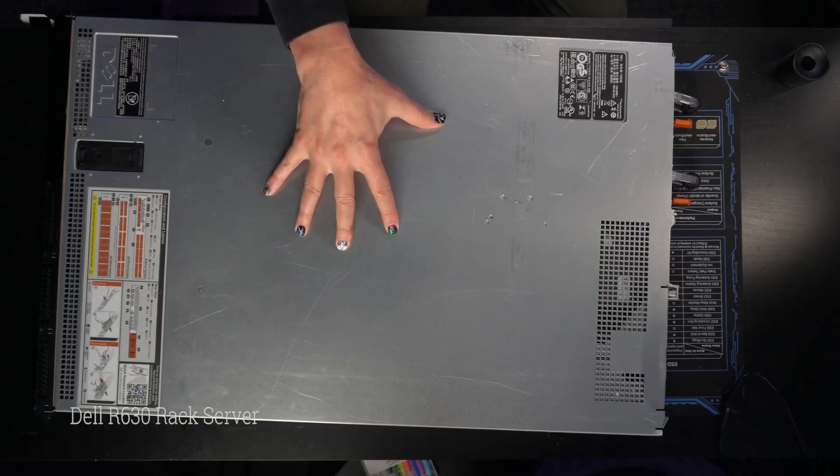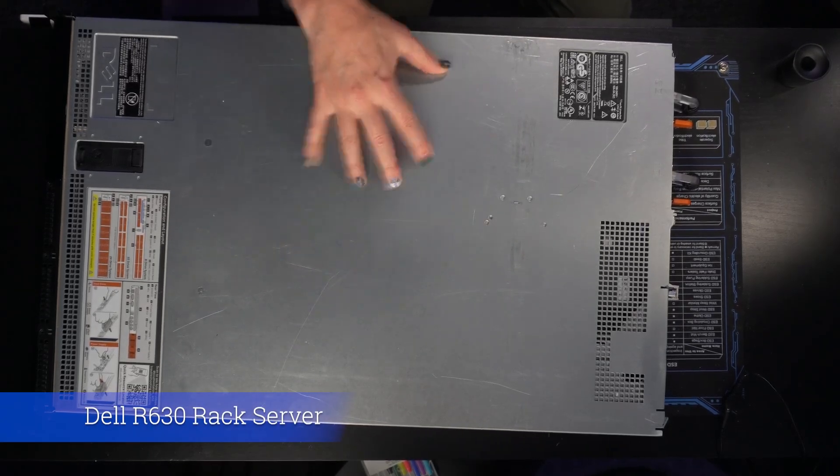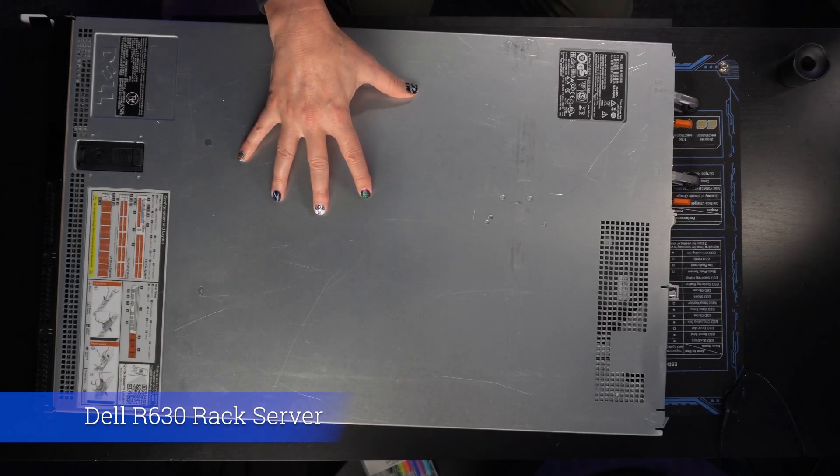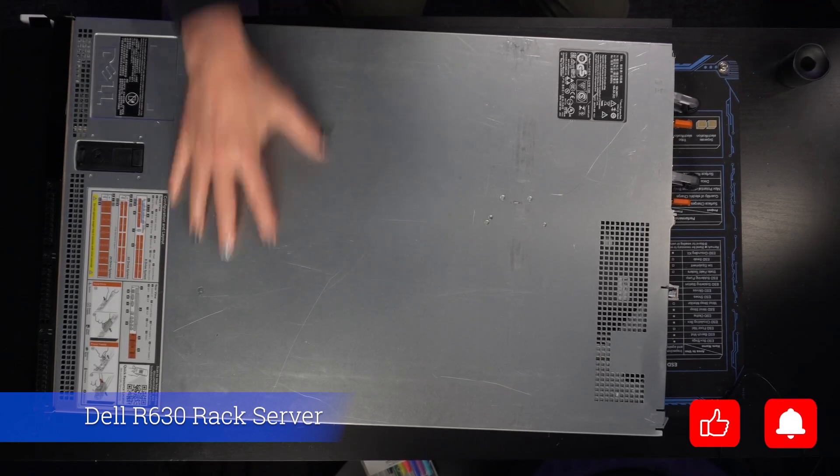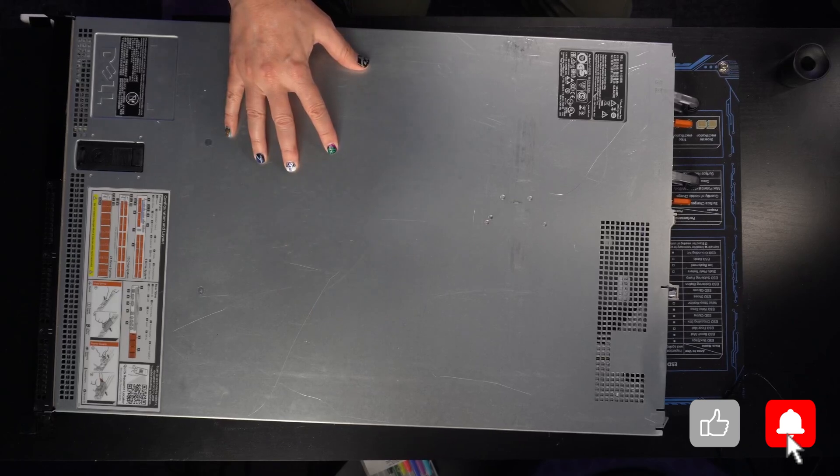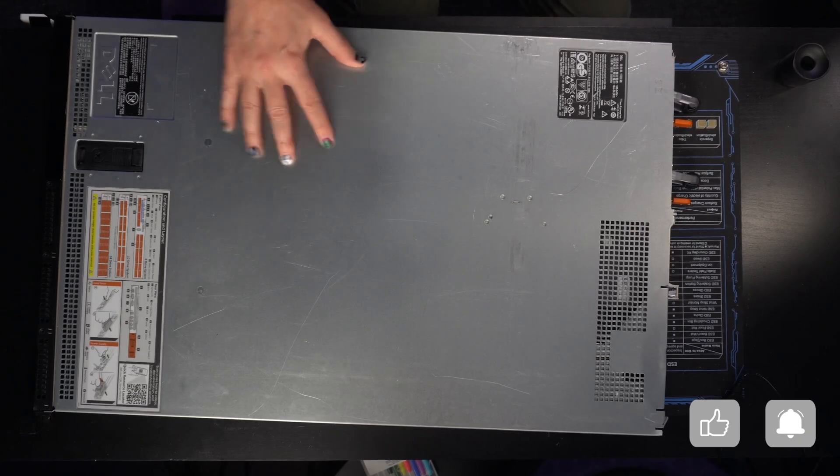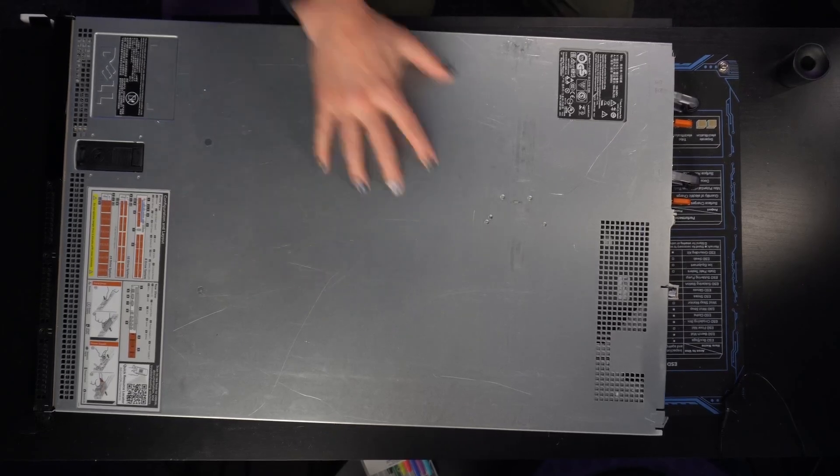And again, this represents the physical server from Dell that we'll be using, and I did buy this on eBay a couple weeks ago, and the cost was around $300, and it does include 256 gigabytes of RAM, which is an amazing amount of RAM for $300. So join me in the next video as part of the series as we prep the hardware to support our nested lab environment.